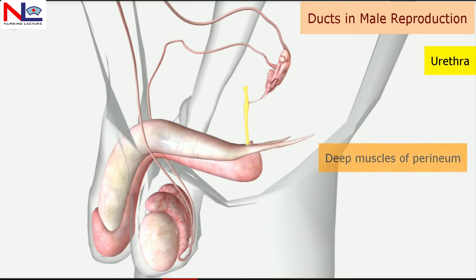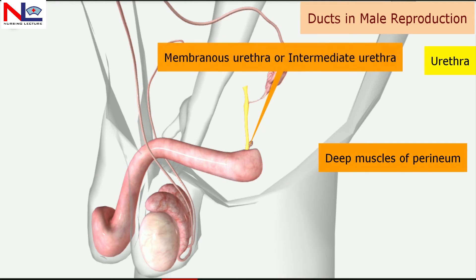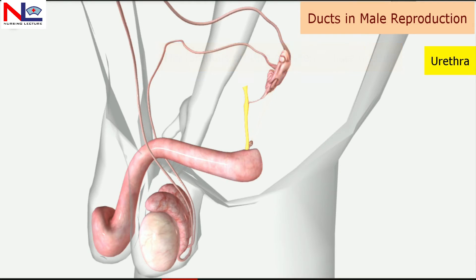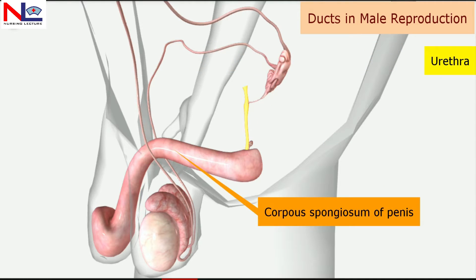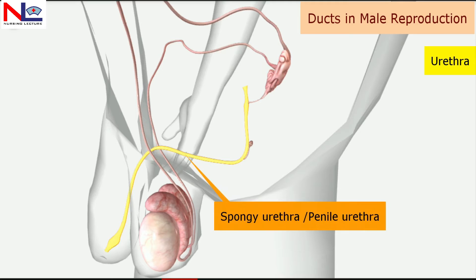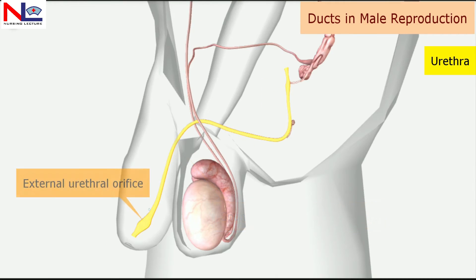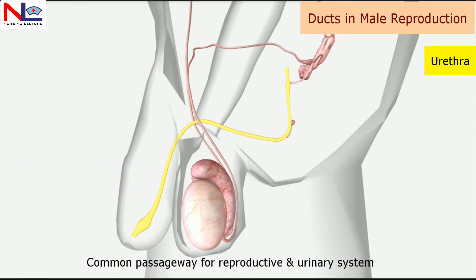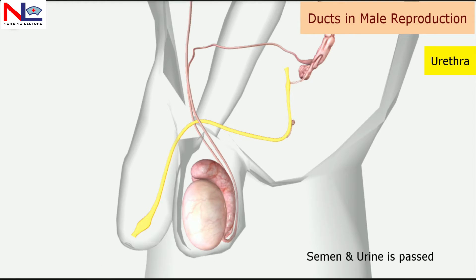When the urethra passes through the deep muscles of the perineum it is termed the membranous urethra. When it passes through the corpus spongiosum of the penis it is termed the spongy urethra, and it ends at the external urethral orifice. The urethra is a common passageway for both the reproductive and urinary systems, through which semen as well as urine pass to the exterior.